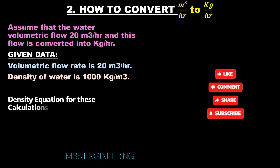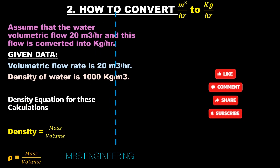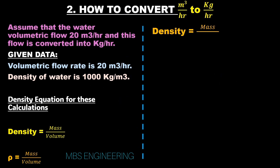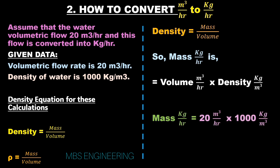Density equation for these calculations: density is equals to mass divided by volume, so mass in kilogram per hour is equals to volume in meter cube per hour multiplied by density in kilogram per meter cube. Mass equals 20 meter cube per hour into 1,000 kilogram per meter cube. Cancel the top and bottom meter cube units and we will get the value in kilogram per hour. Therefore mass is equals to 20,000 kilogram per hour.